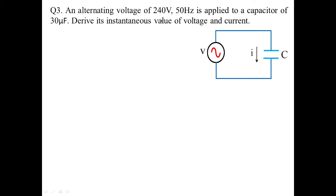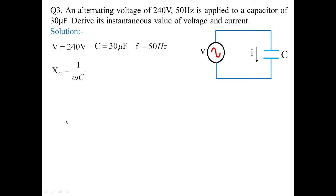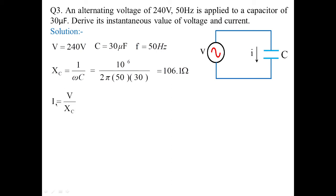Now take a capacitor with a value of 30 microfarads (30 × 10⁻⁶ F) with the same 240 V, 50 Hz supply. The capacitive reactance XC = 1/(2πfC) = 1/(2π × 50 × 30 × 10⁻⁶) = 106.10 ohms. The RMS current I = 240 / 106.1 = 2.26 amperes.